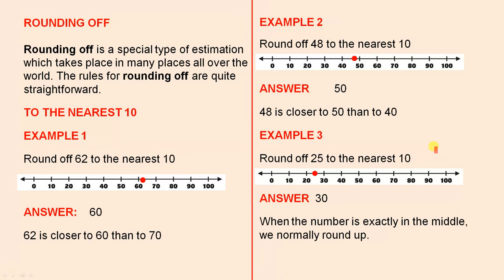Example 3: Round off 25 to the nearest 10. The answer is 30. When the number is exactly in the middle we normally round up. So 25 is halfway between 20 and 30, so the rule is you normally round up.